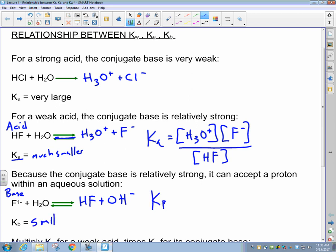And our Kb expression is going to be the concentration of HF times the concentration of the hydroxide over the concentration of the F-.